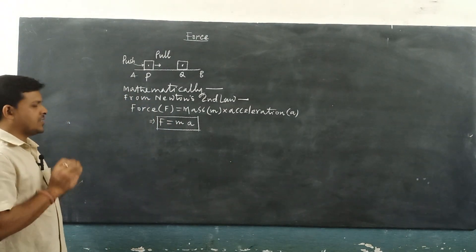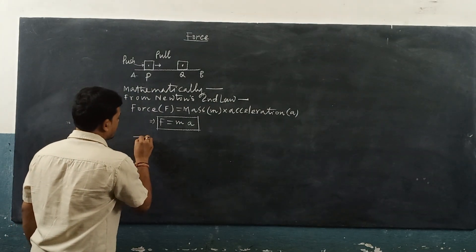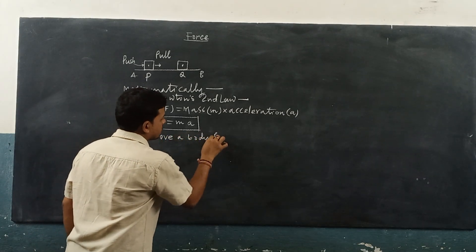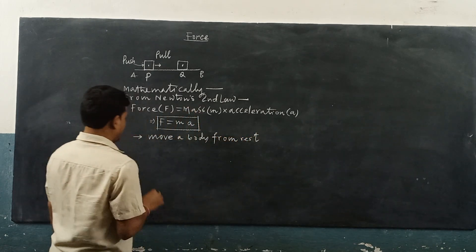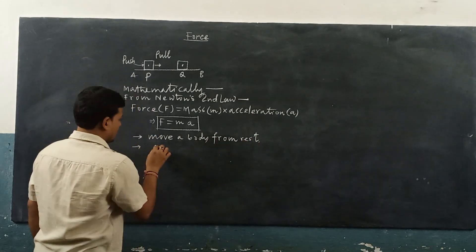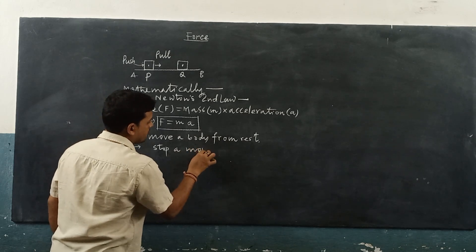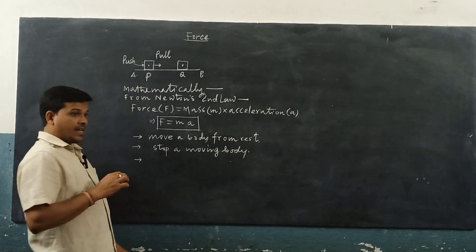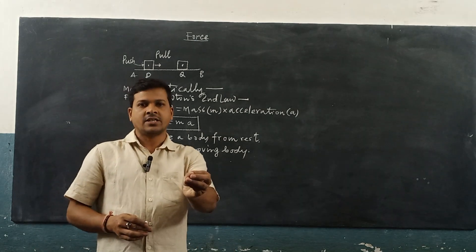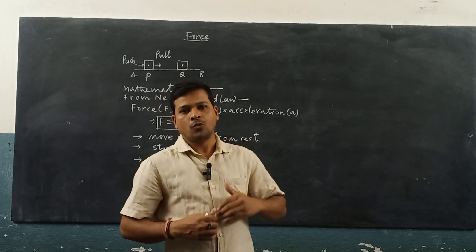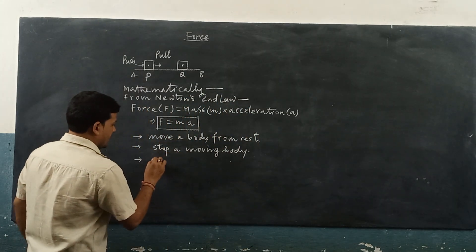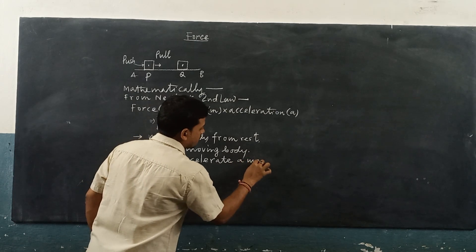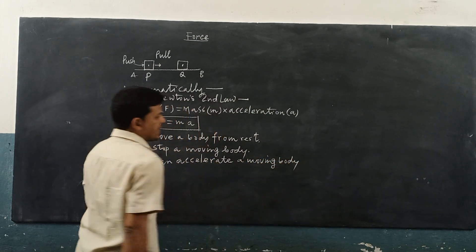When force is applied on a body, there are many changes that occur — these are called the effects of force. The first one: it can move a body from rest. Also, it can stop a moving body when applied in the opposite direction of motion. On the other hand, it can accelerate a moving body — if you push the ball in the same direction of motion, then the ball moves fast.